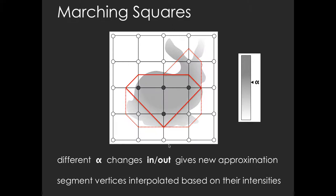A different ISO value will change the in-out classification of grid vertices and will lead to a different ISO line approximation. The intersections of the ISO line and grid cells are estimated via linear interpolation along each edge based on the actual data values.